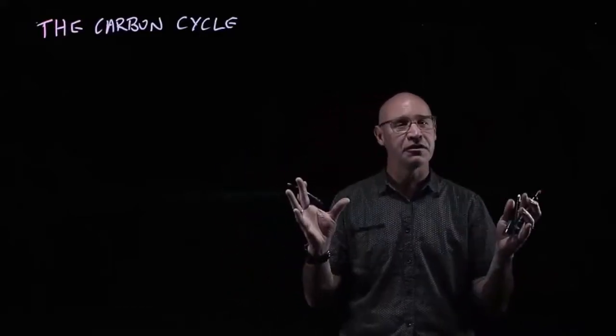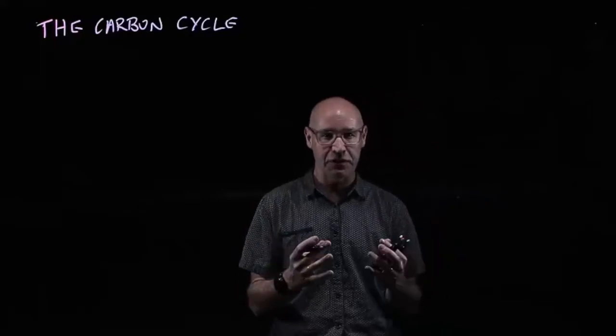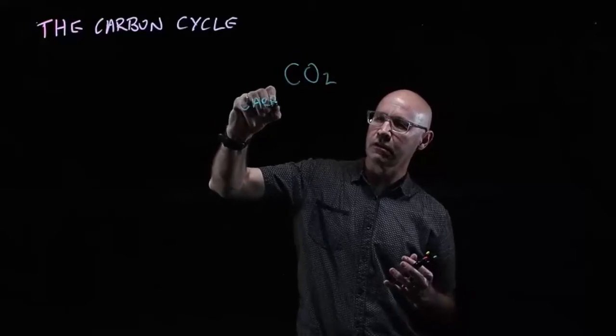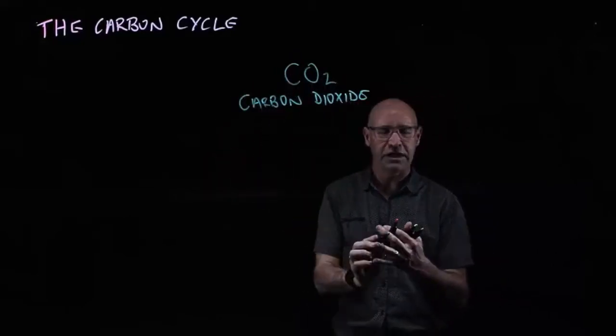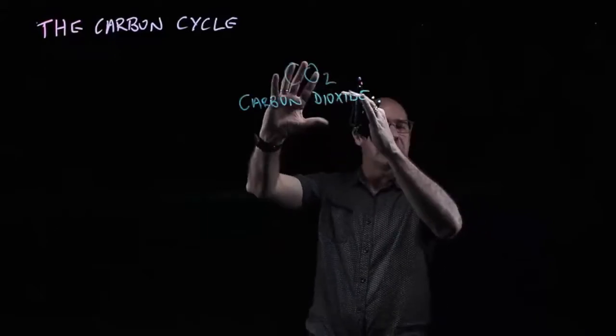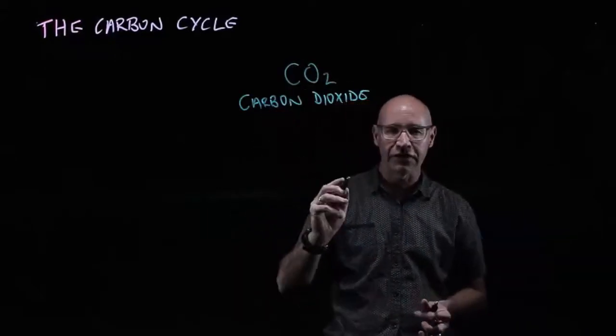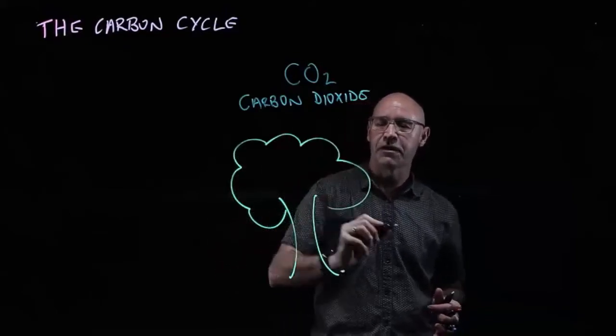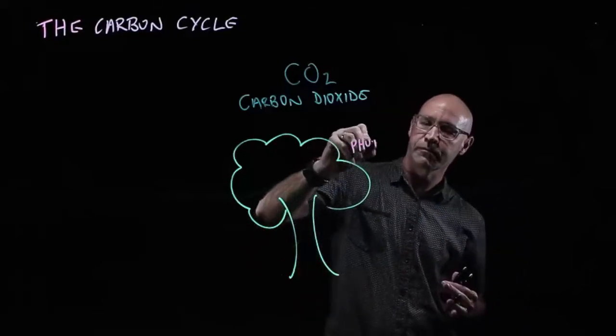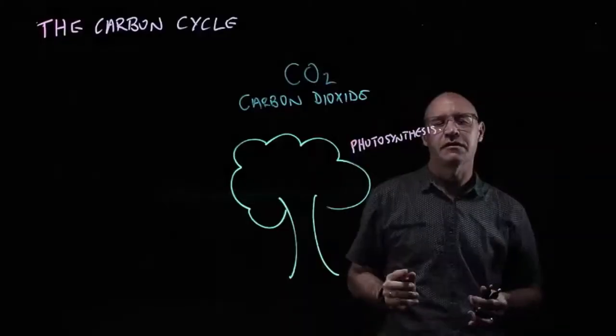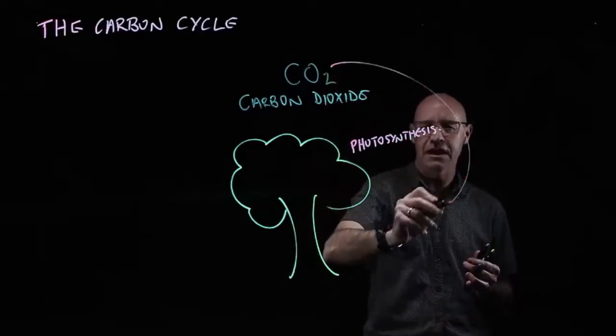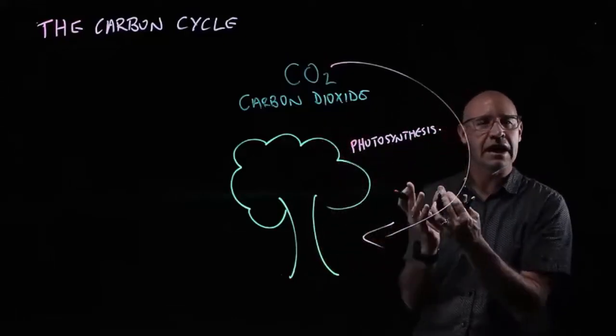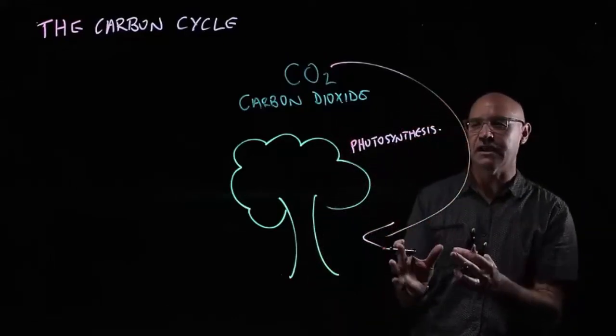The first one is in the atmosphere, and carbon in the atmosphere of course is in the form of carbon dioxide. Now carbon dioxide needs to go into living things, and it does that via plants through the process of photosynthesis. Photosynthesis is the process of bringing carbon out of the atmosphere into living things, and we say that what's happening is that the carbon is being fixed. So it's carbon fixation.